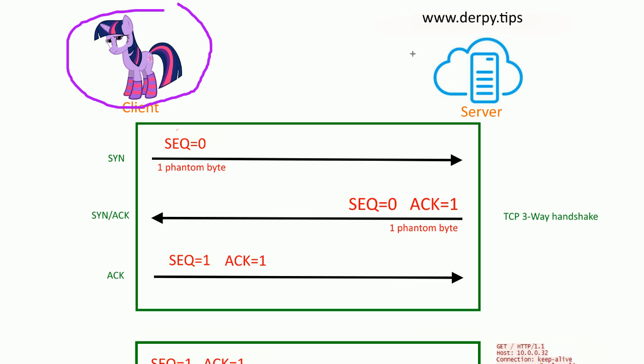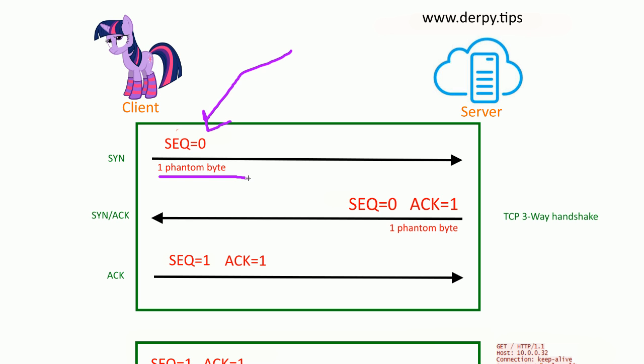So the client sets up a connection with the server and sets a sequence number of zero. Technically it's a 32-bit number and our client sets it to a random number, but Wireshark uses that as a starting point and sets it to zero, so we count up from there — it's just easier to see that way. We send one phantom byte. Even though there isn't a payload, because the SYN bit is set, it's as if we sent one byte, which helps us with our counting.